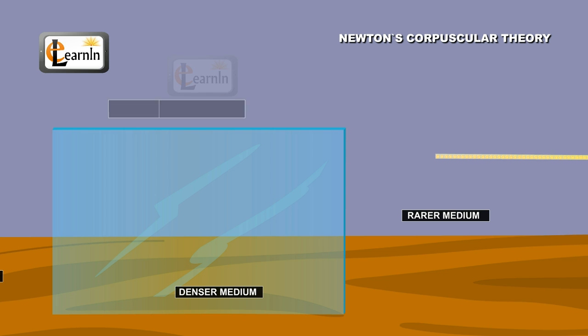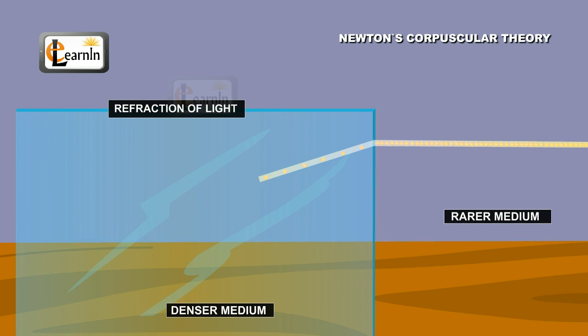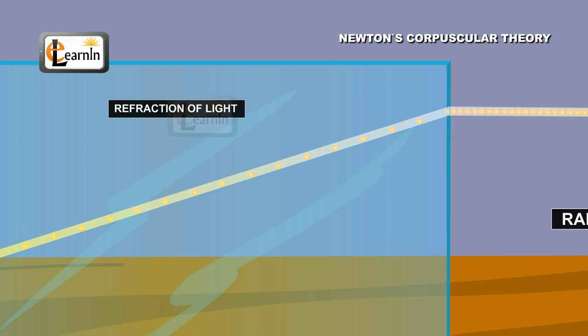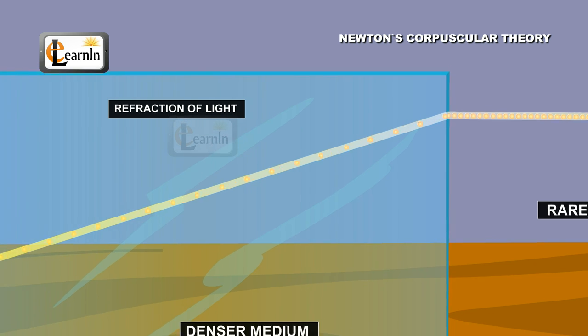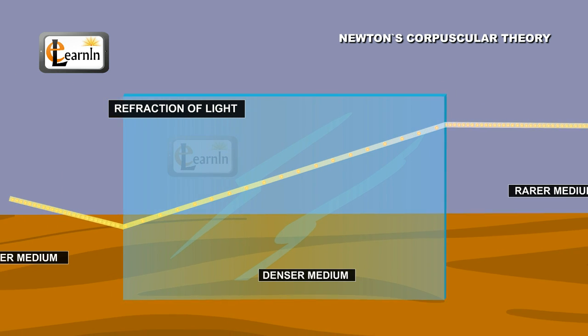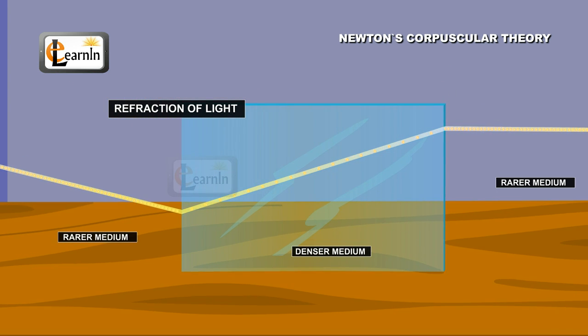According to Newton, the refraction of light was due to the supposed change in the speed at which they travel, thereby causing a resultant change in the direction whenever these corpuscles enter from, say, a denser medium to a rarer medium.